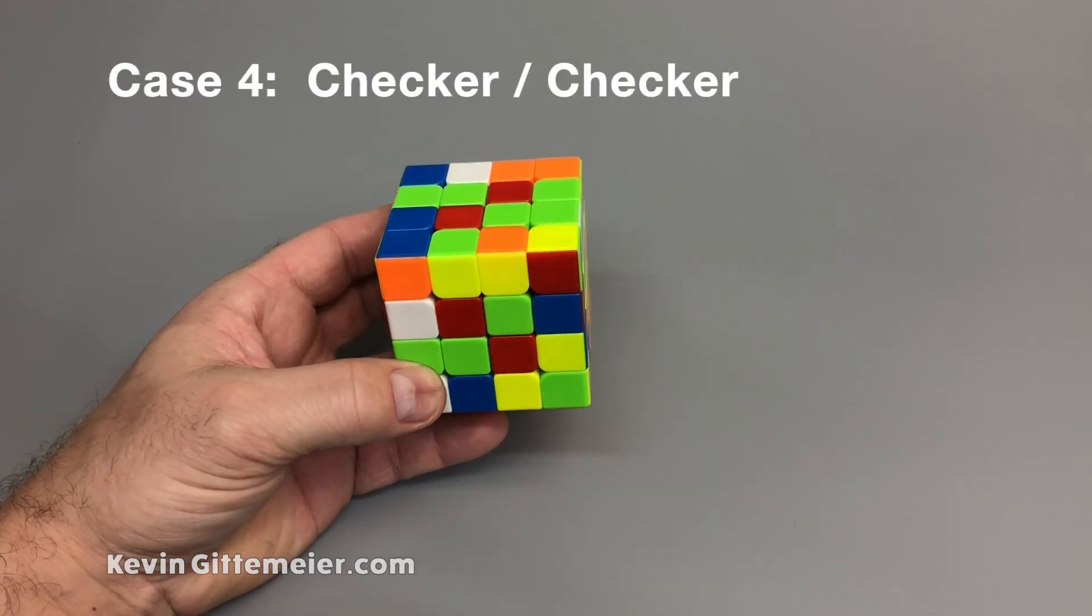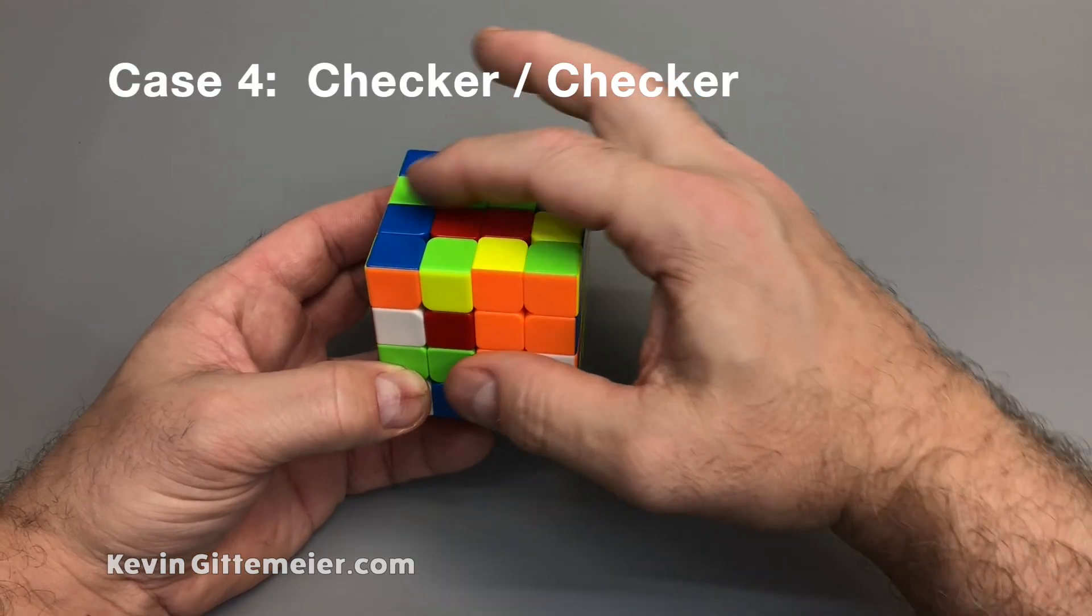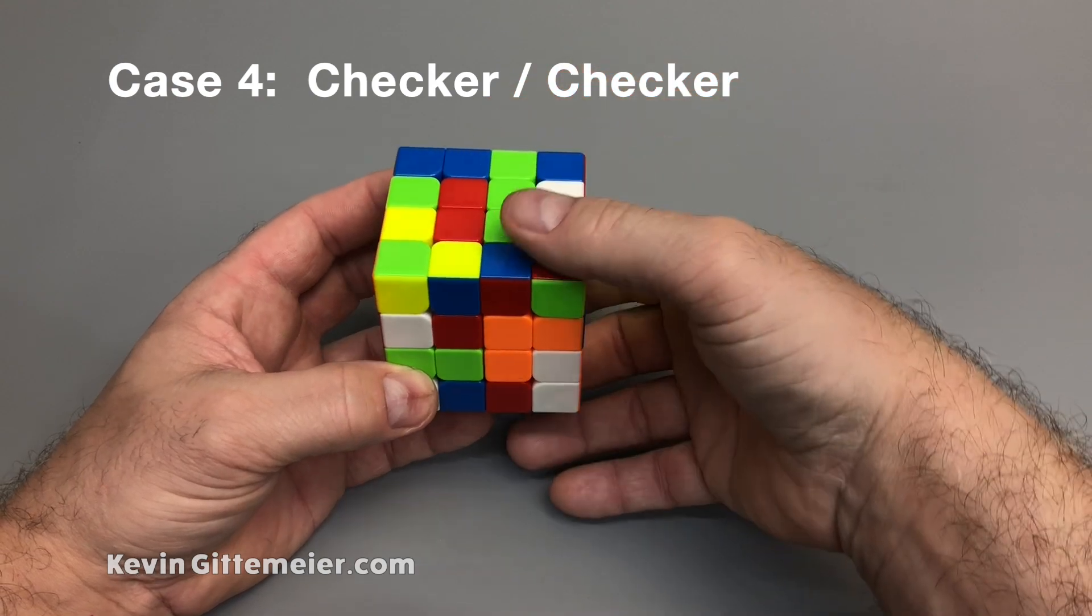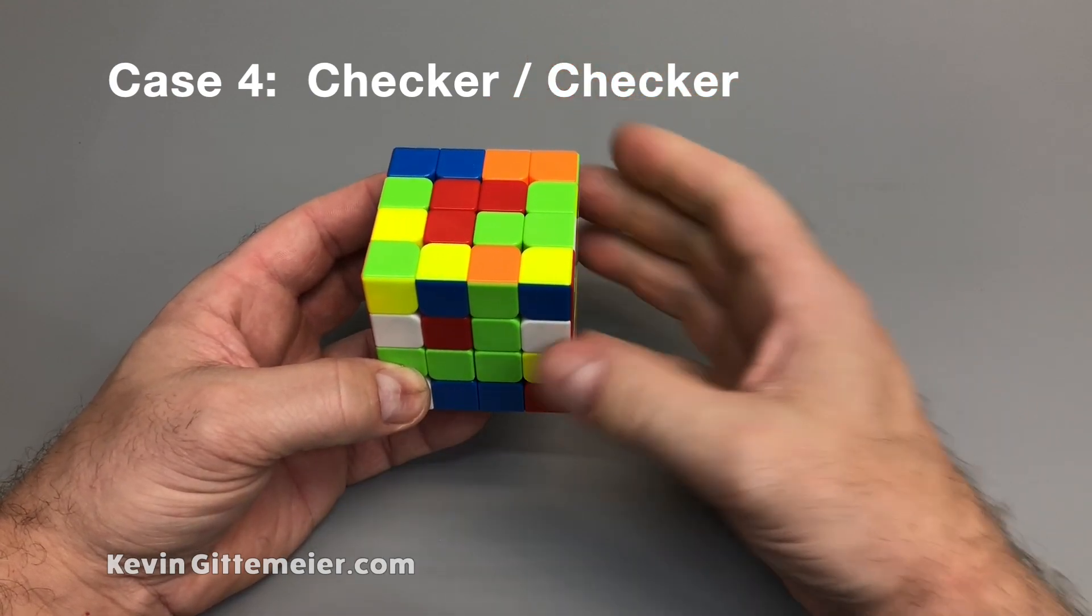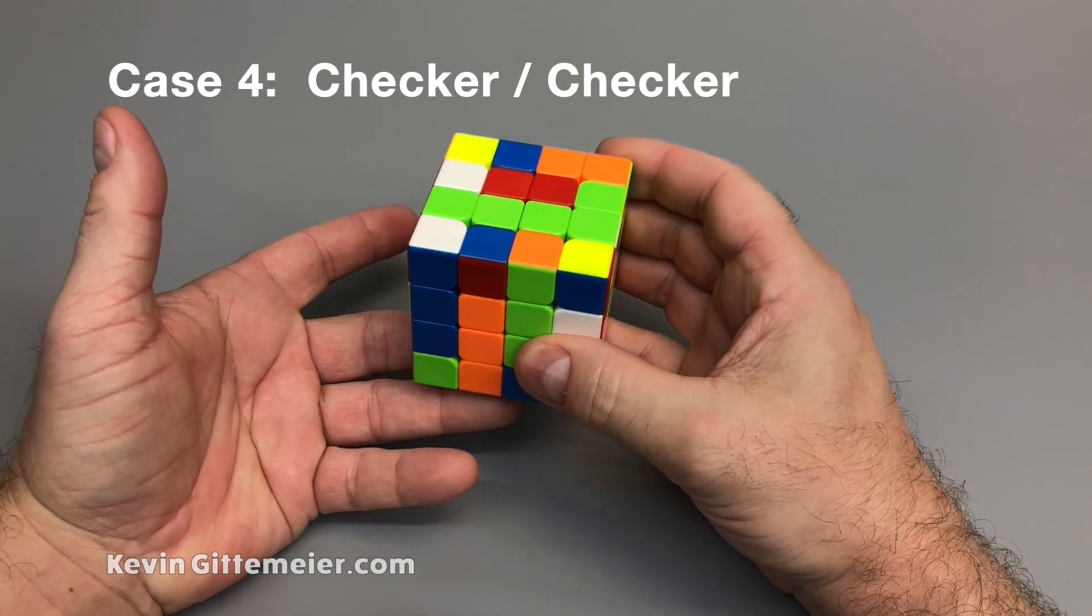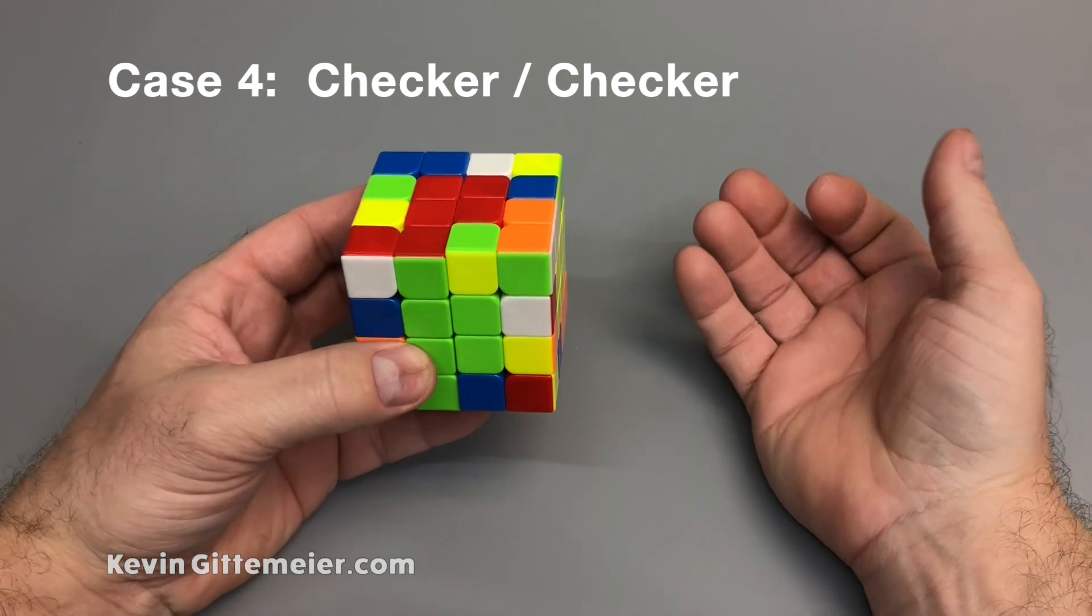Case four, checker pattern, checker pattern. We slice up forming two bars, bring the green down, which forms the 3-1 case we already learned how to solve. We match up those two bars and solve both centers.